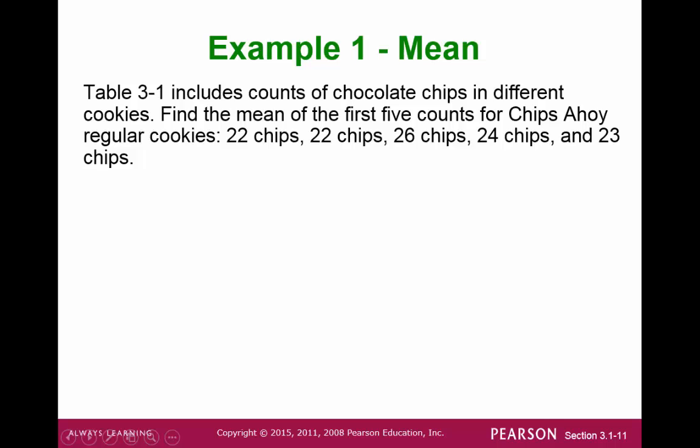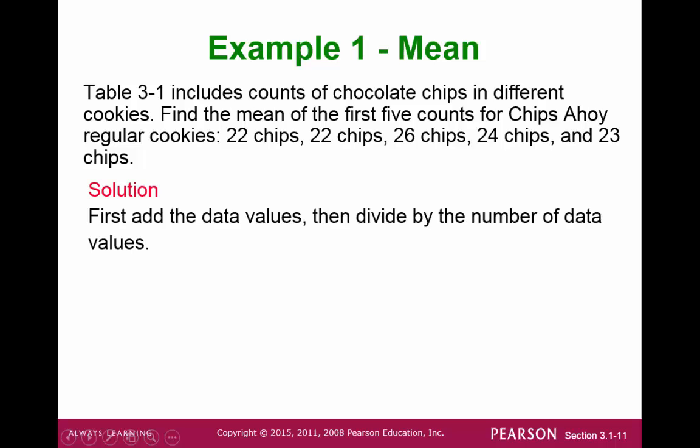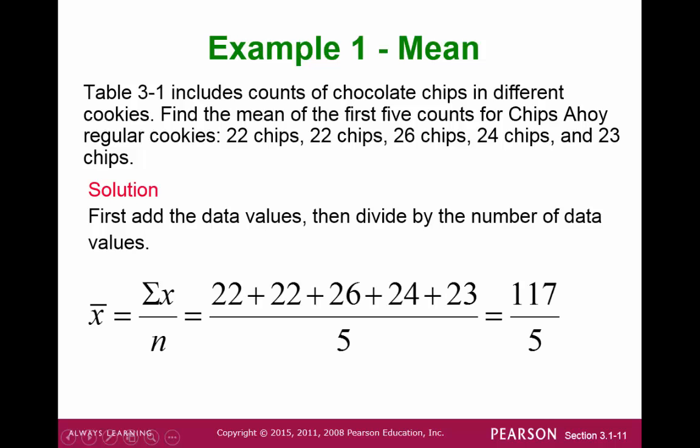Let's try an example. Here we have five numbers, 22, 26, 24, and 23. To find the mean, we add up the values, then divide. Using the formulas, we get 17 divided by 5, or 23.4 chips.